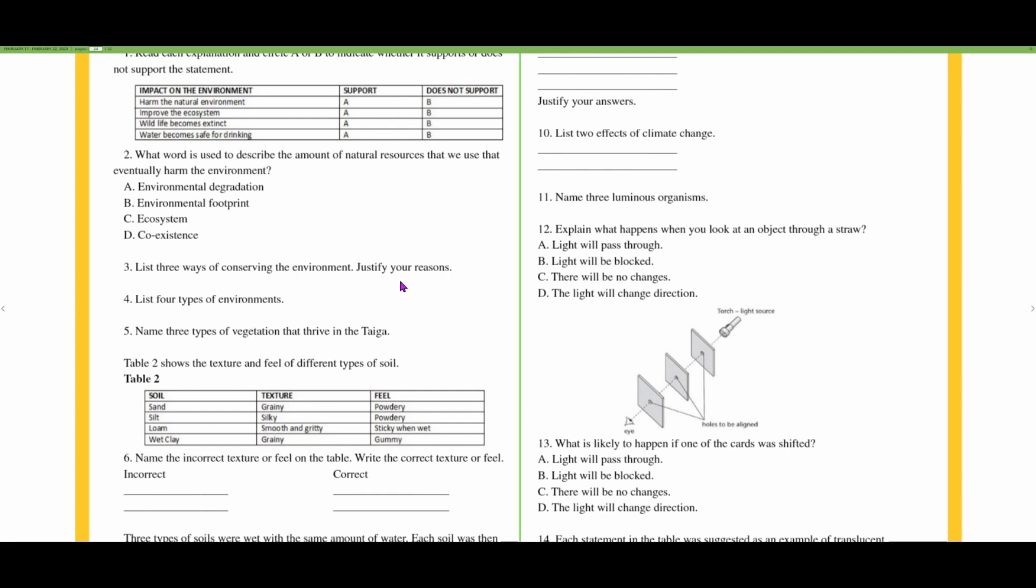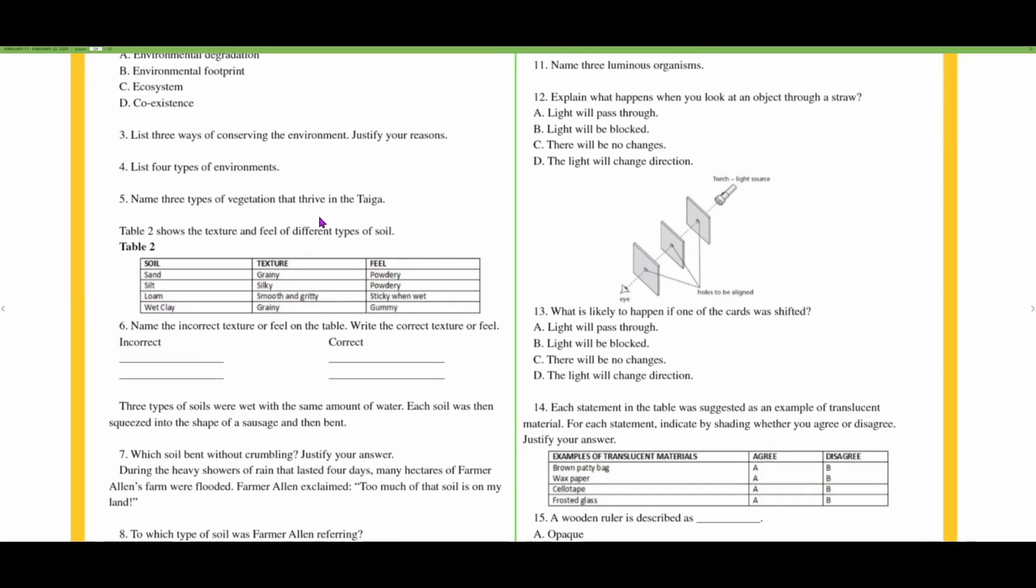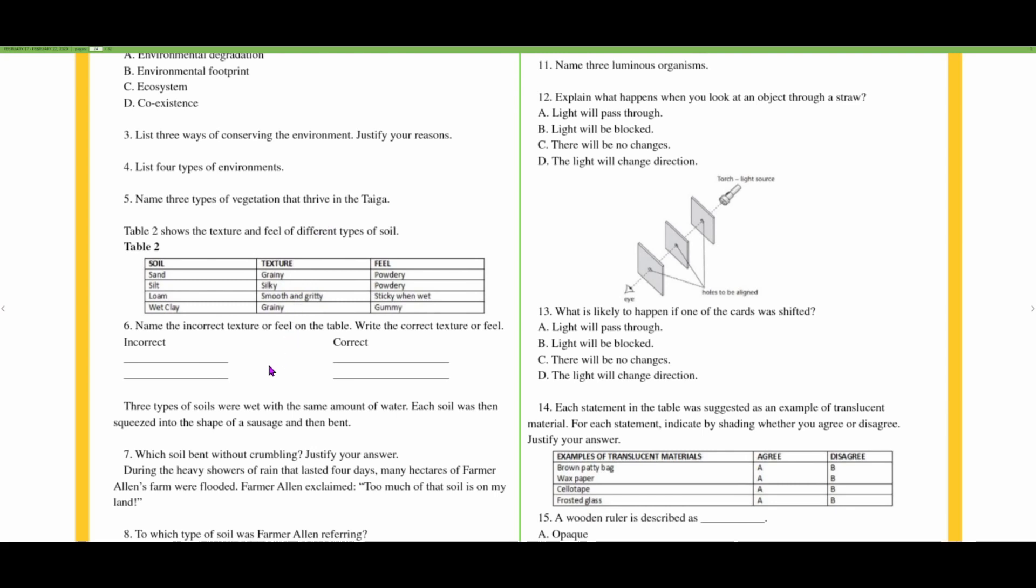Number four: list four types of environments. We have desert environments, rainforest environments, taiga and tundra, wetlands. Number five says name three types of vegetation that thrive in the taiga. I would use lichen, moss, and coniferous trees or evergreen trees.